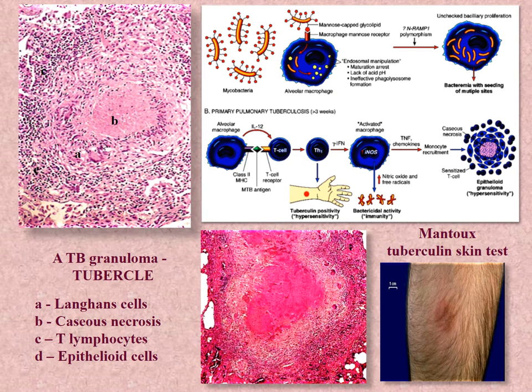AIDS patients may lack granuloma and have more severe disease. Tuberculosis is related to the group of specific inflammations. It remains prevalent in developing countries. Transmission is from person to person via airborne droplets. Infections may be dormant for years. The Mantoux tuberculin skin test is often used to screen people at high risk for TB.